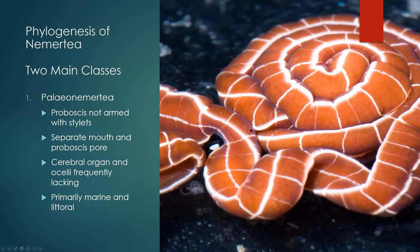Now, the phylogeny of nemerteans. The first main class is the Palaeonemertea. These animals do not have stylets with their proboscis. They have a separate mouth opening from their proboscis pore, and they lack most cerebral organs and ocelli. They primarily inhabit marine or littoral environments. While not the most specialized of the ribbon worms, this class does include some of the largest species.